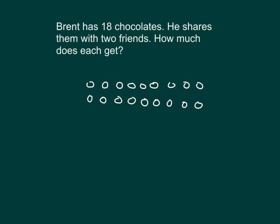He shares them with two friends. Okay, so we're sharing them with how many people? Well, with two people. But we also have Brent, who's also going to receive chocolates. So we have Brent, and then we also have his two friends.